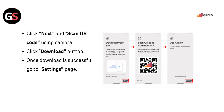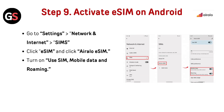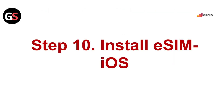Once the download is successful, go to the Settings page. Step 9 — Activate eSIM on Android: Go to Settings, then Network and Internet, then SIMs. Click on eSIM and select AirLo eSIM. Turn on Use SIM, Mobile Data, and Roaming.